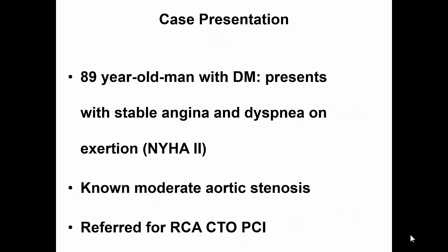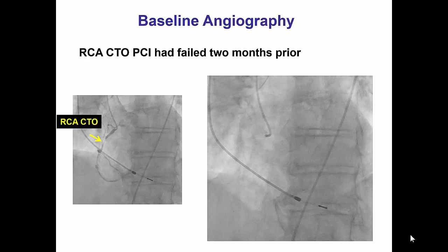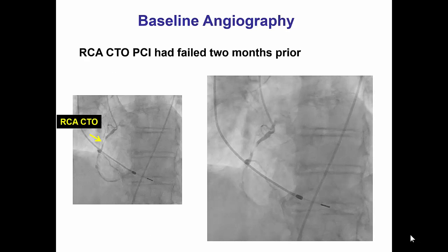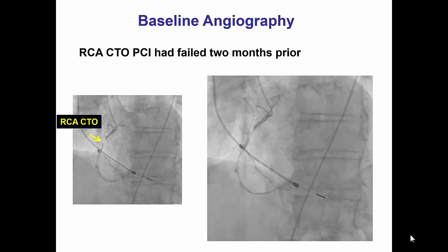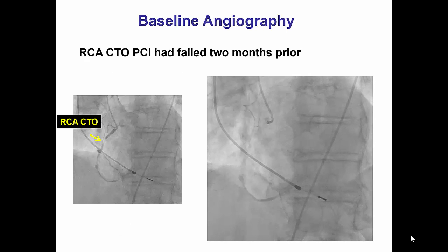The patient was an 89-year-old diabetic man who presented with stable angina and dyspnea on exertion. He had non-moderate aortic stenosis and was found to have single-vessel disease with an occlusion of the right coronary artery. He was therefore referred to our center for PCI of the RCA.